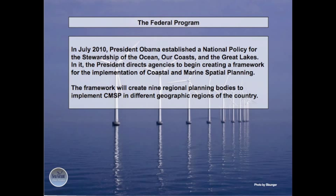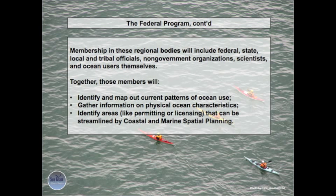In July 2010, President Obama established a national policy for the stewardship of the ocean, our coasts, and the Great Lakes. In it, the President directs agencies to begin creating a framework for the implementation of Coastal and Marine Spatial Planning. The framework will create nine regional planning bodies to implement CMSP in different geographic regions of the country. Membership in these regional bodies will include federal, state, local, and tribal officials, non-government organizations, scientists, and the ocean users themselves. Together, those members will identify and map out current patterns of ocean use, gather information on physical ocean characteristics, and identify areas — like permitting and licensing — that can be streamlined by Coastal and Marine Spatial Planning.